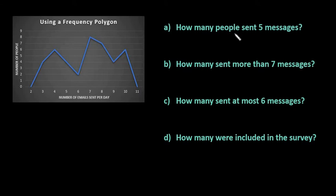So the first thing that we want to look at is how many people sent five messages. For this one we want exactly five. So what we're going to do here is we're going to go to the five and we're going to move up to see how many people and we'll look at the intersection. We would go across here and see that exactly four people sent five messages.